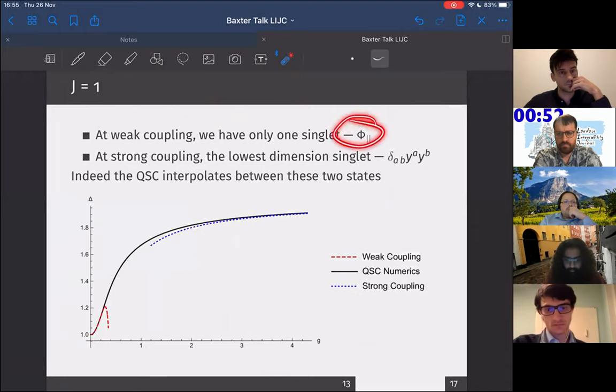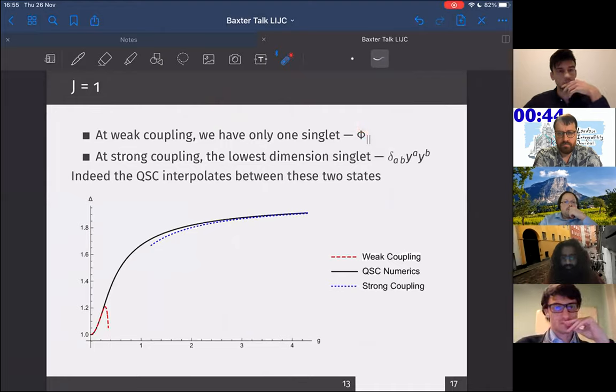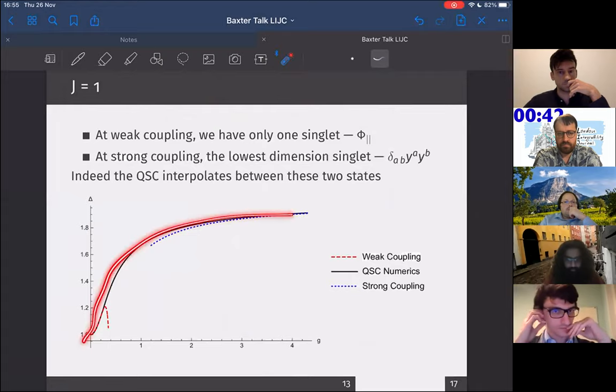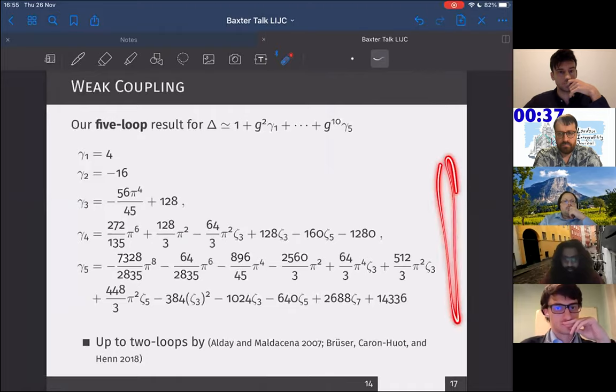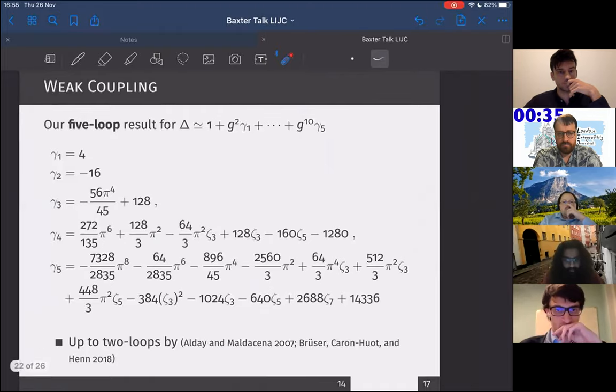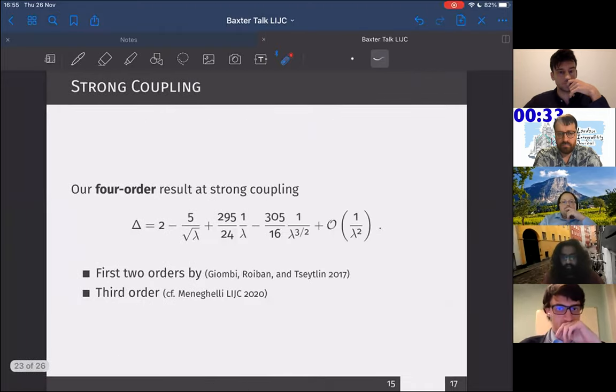I have a Wilson line and I insert parallel scalars, the same scalars that couple to the Wilson line. I see that at weak coupling, I have just one singlet. At strong coupling, I have another singlet. These two have different engineering dimensions, but the numerical solution of the quantum spectral curve neatly interpolates between both of them, which is really cool. We have a high order result at weak coupling up to five loops, and a result at strong coupling.